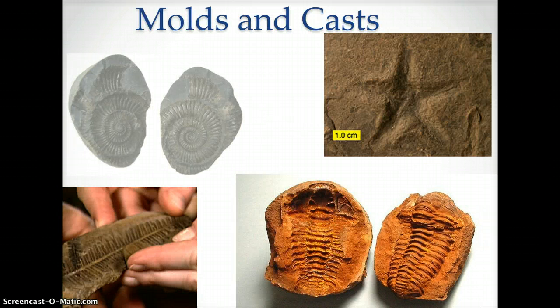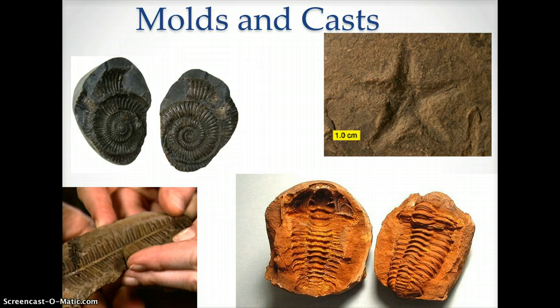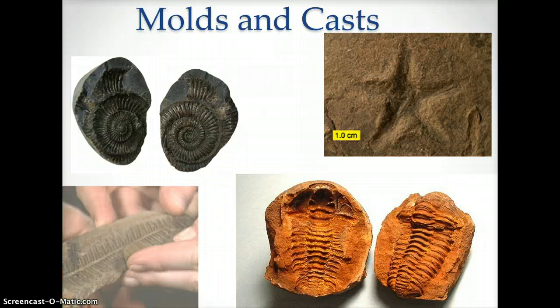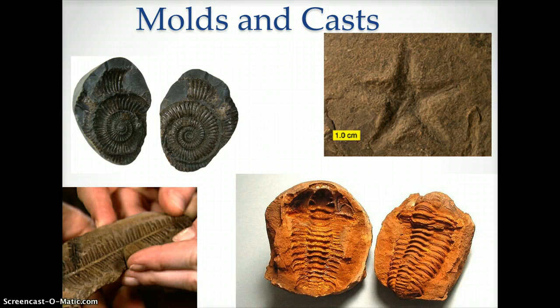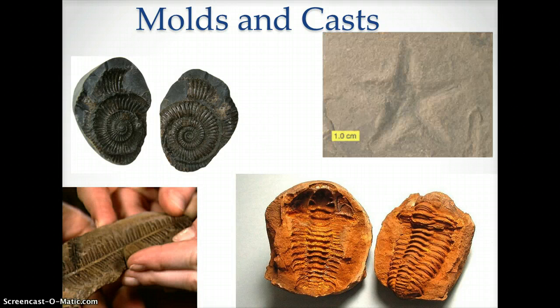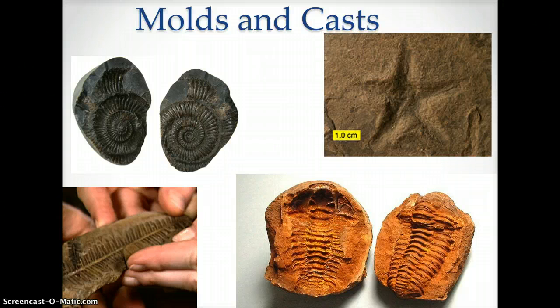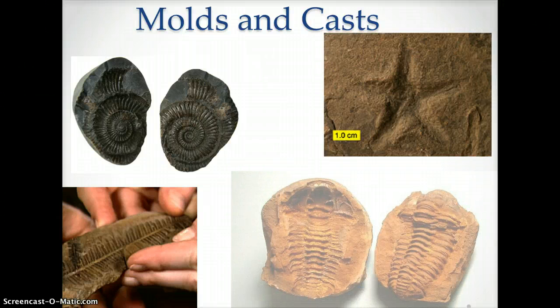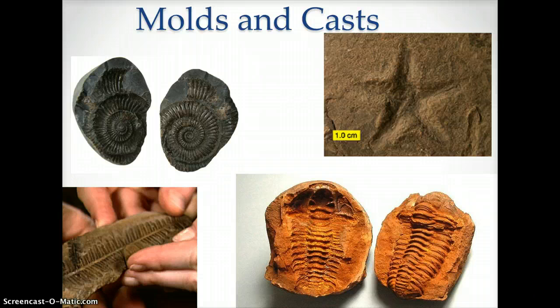The first image shows a mold on the left and a cast on the right. The second image shows a cast of a plant. The third image shows a mold of a starfish. And the fourth image shows a mold on the left and a cast on the right.